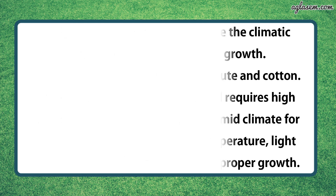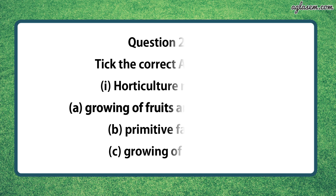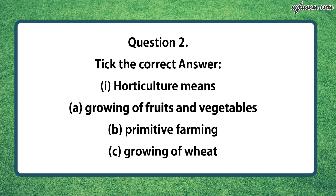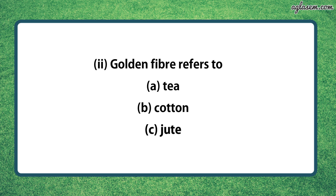Moving to question number two which says, tick the correct answer. Part one is, horticulture means: first, growing of fruits and vegetables; second, primitive farming; third, growing of wheat. So the answer is, growing of fruits and vegetables. Second, golden fiber refers to: first, tea; second, cotton; third, jute. So the answer is third, that is jute.